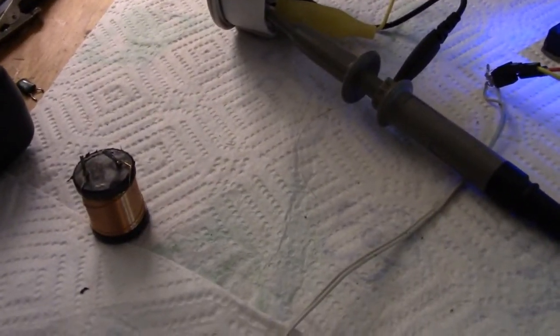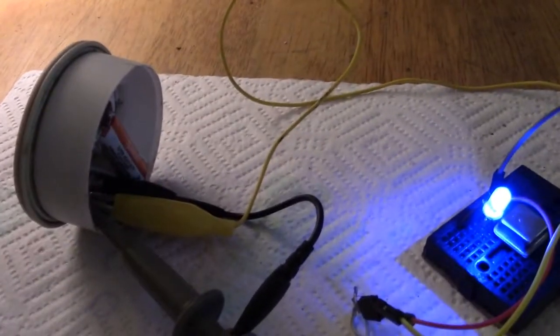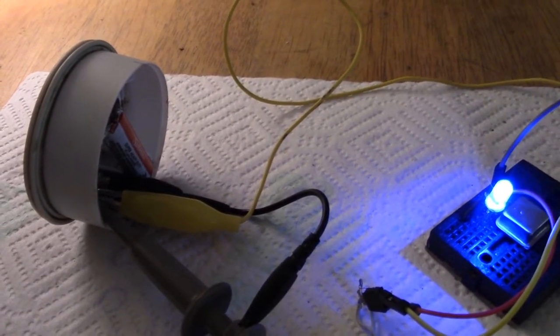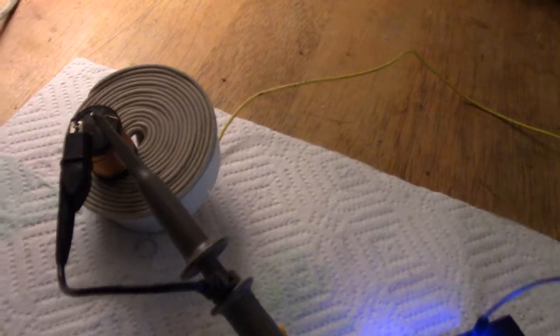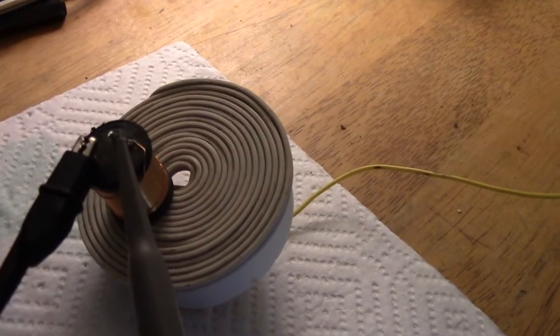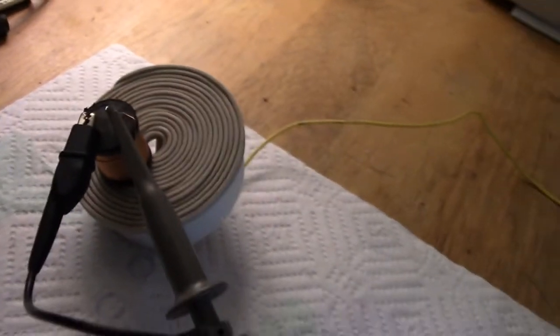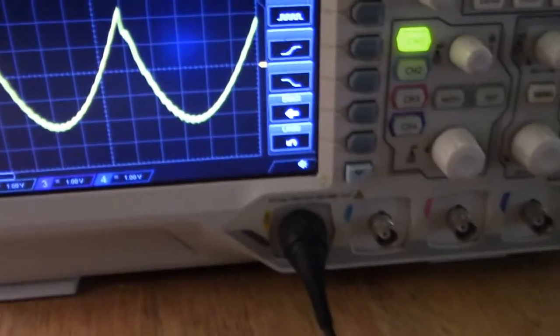If I use a sniffer coil instead connected to the scope, here's the output - same frequency, but what you can see are tiny little ripples there between each pulse.